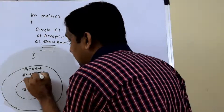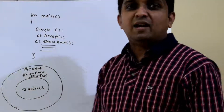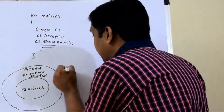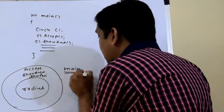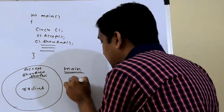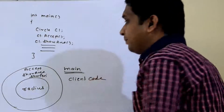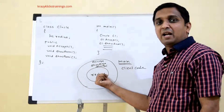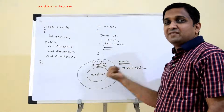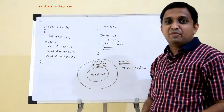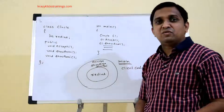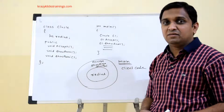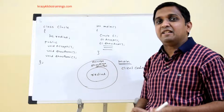The main function is also called client code. The client code does not have direct access to radius since it is private. If it wants to access radius, it must go through the public member functions of the class. These public member functions act as an interface to access the private data members. This is how we achieve abstraction and encapsulation in our class.